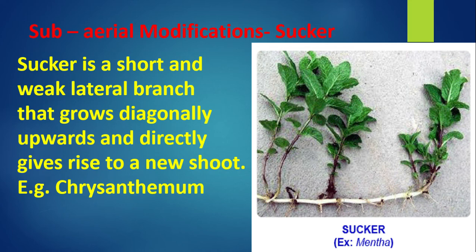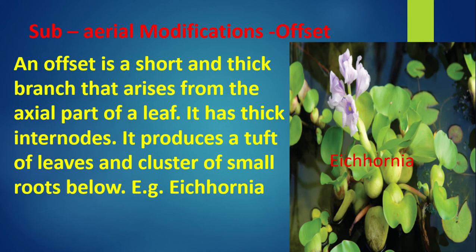Subaerial modification — Sucker: A sucker is a soft and weak lateral branch that grows diagonally upwards and directly gives rise to a new shoot. For example, chrysanthemum and mentha. Offset: An offset is a soft and thick branch that arises from the axial part of a leaf; it has thick internodes and produces a tuft of leaves and a cluster of small roots below. For example, Eichhornia.